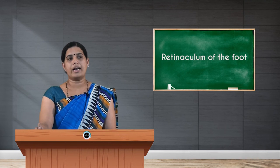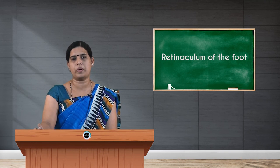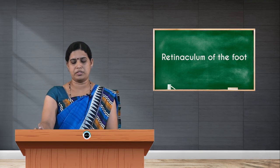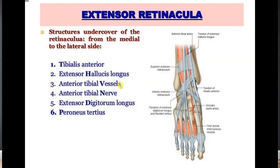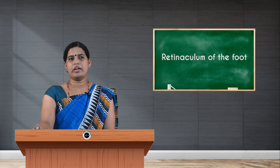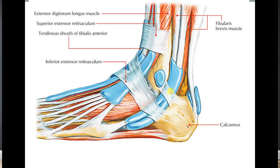The long saphenous vein and short saphenous vein also pass superficial to the extensor retinaculum. The structures passing deep to the retinaculum are the same as those of the anterior compartment of the leg: tibialis anterior, extensor digitorum longus, extensor hallucis longus, peroneus tertius, the anterior tibial artery, and the deep peroneal nerve, also called the anterior tibial nerve.